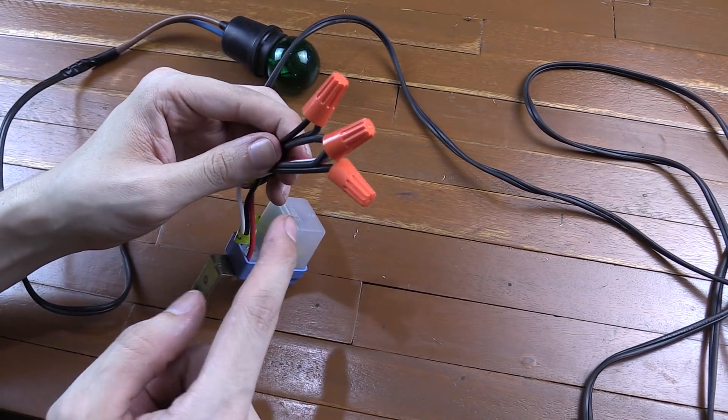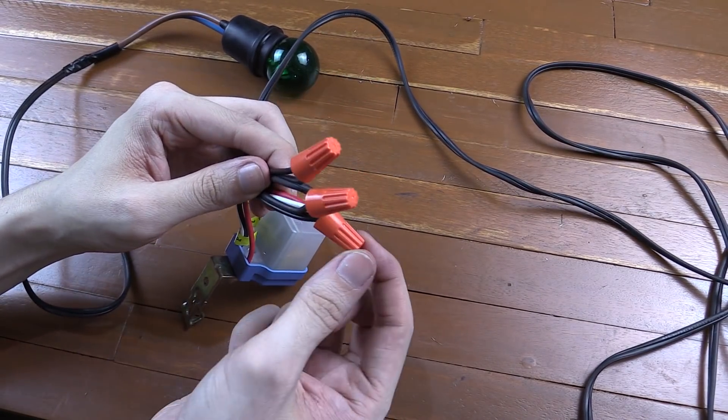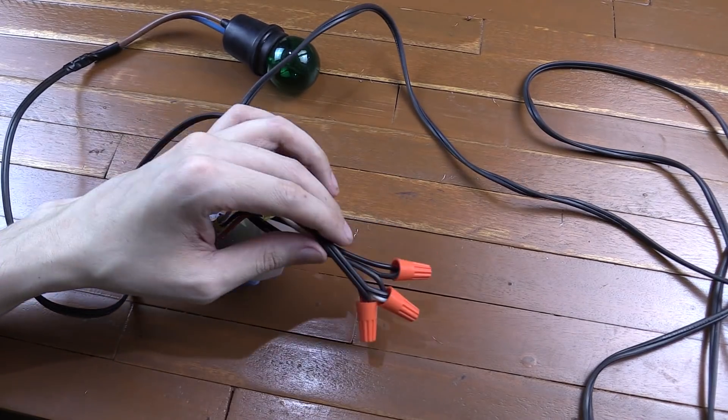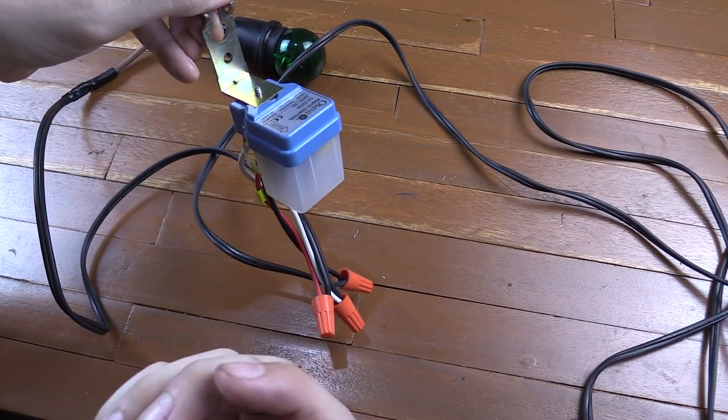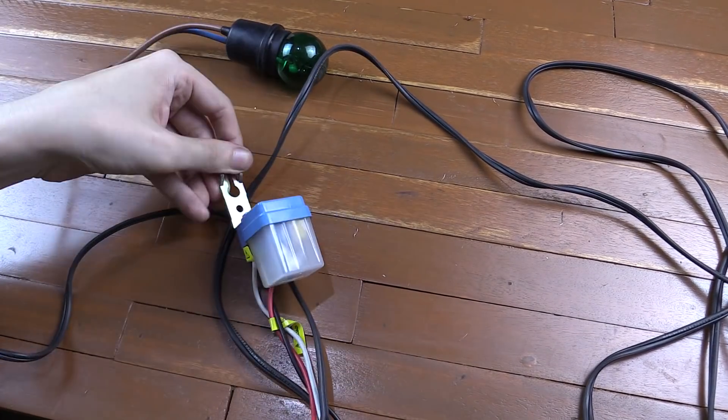What I will do though, since this is going outside, is I'll put some electrical tape around these just to make sure no water can get inside. But that's pretty much ready to now screw on to wherever I'm going to put it and work as an automatic nightlight.